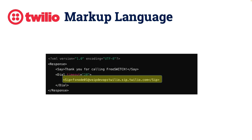In the last step, Twilio is told to forward the call to our SIP address — in this case our FreeSwitch system. In summary, the TWIML script first plays a message and then forwards the call to our FreeSwitch via SIP. This allows us to handle the call within our local system.